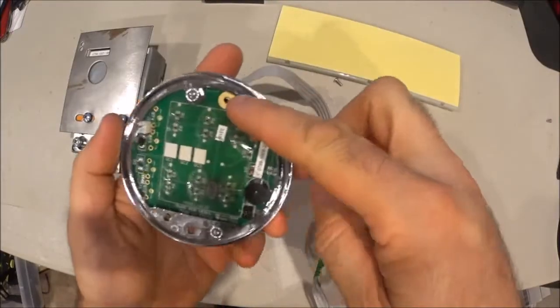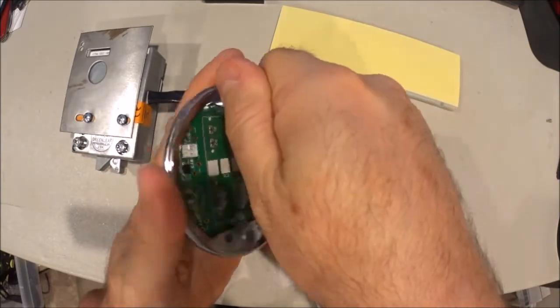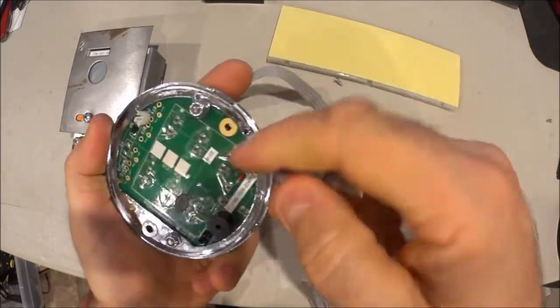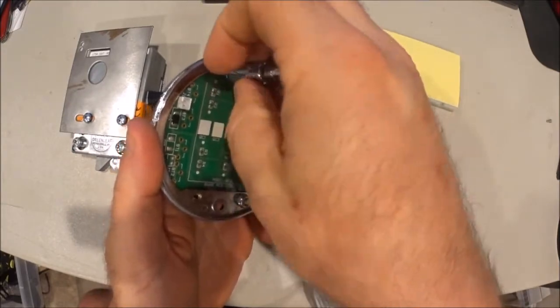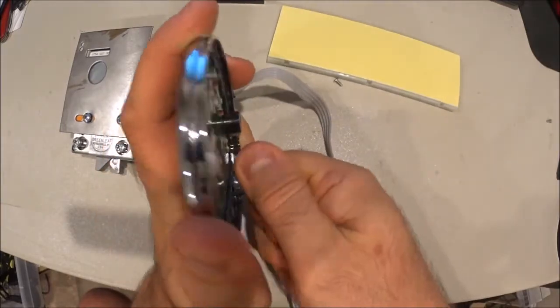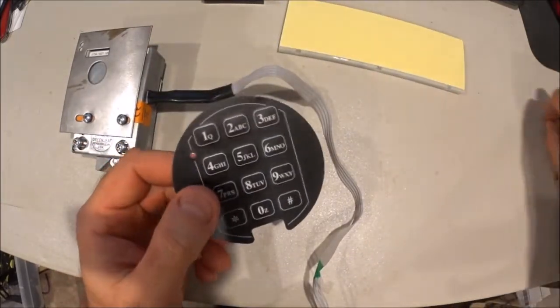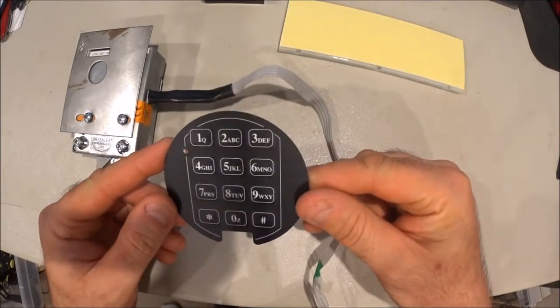There are 2 acorn nuts, locking acorn nuts, 5/16ths variety, up here and here. Take those 2 acorn nuts off and you can get the keypad out of the little chrome bezel. So that pretty much takes care of the outside part.